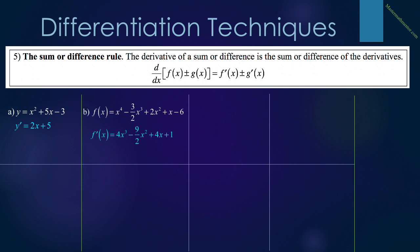In B, f of x equals x to the fourth minus 3/2 x cubed plus 2x squared plus x minus 6. Taking the derivative of each term: f prime of x equals 4x cubed minus 9/2 x squared plus 4x plus 1. We do not need to worry about the derivative of negative 6 because it is 0. In problem 9, y equals quantity 2x minus 3, squared. We must expand the expression: 4x squared minus 12x plus 9, and the derivative is 8x minus 12. In video 9, we will see other options, but for right now this is the only way.